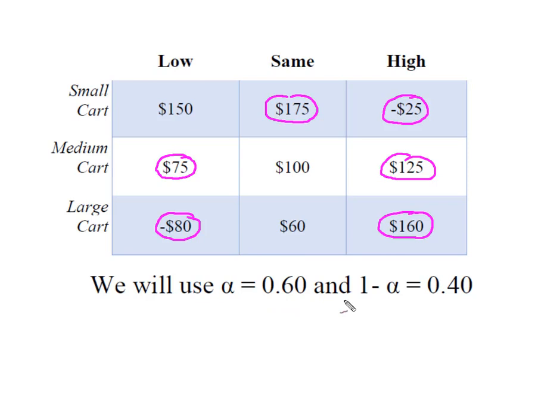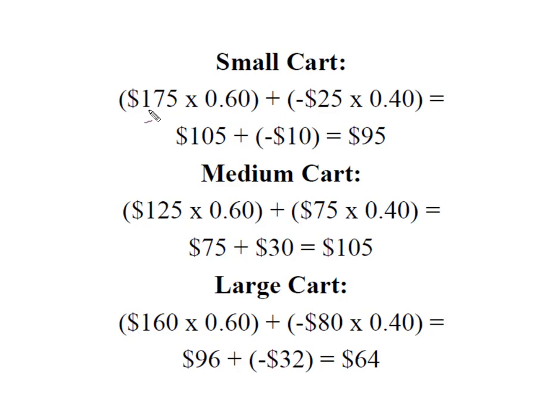Remember, alpha plus 1 minus alpha is always going to equal 1. So I'm simply going to take my $175 — my highest — and weigh it by alpha, and then weigh my lowest payoff by 1 minus alpha. And I'm going to do that for all three decision alternatives. This means maximum payoff times alpha, plus minimum payoff times 1 minus alpha, summed together.